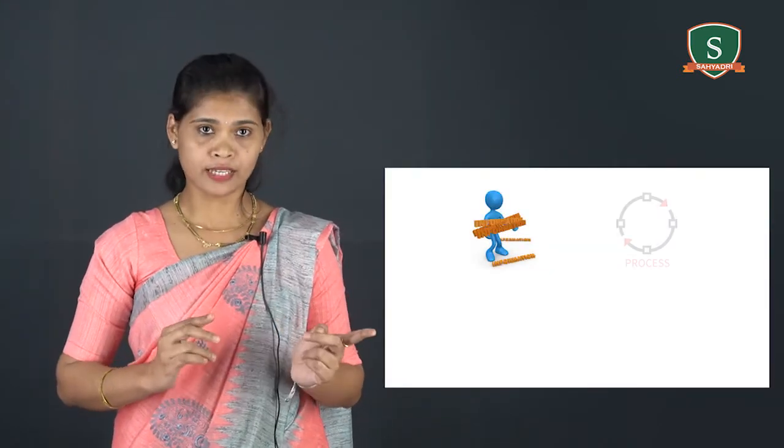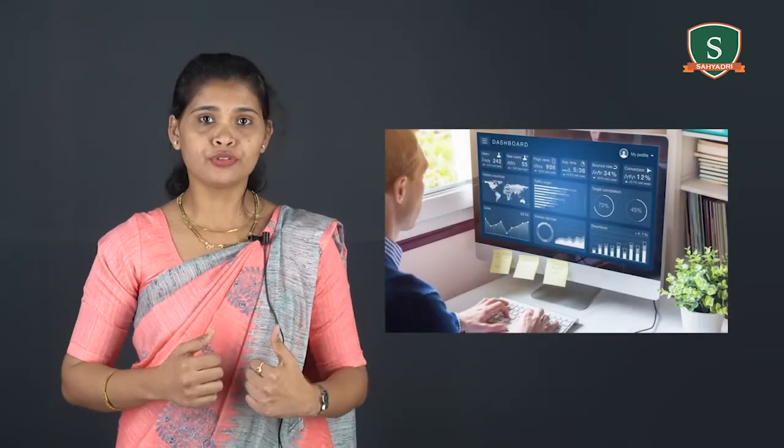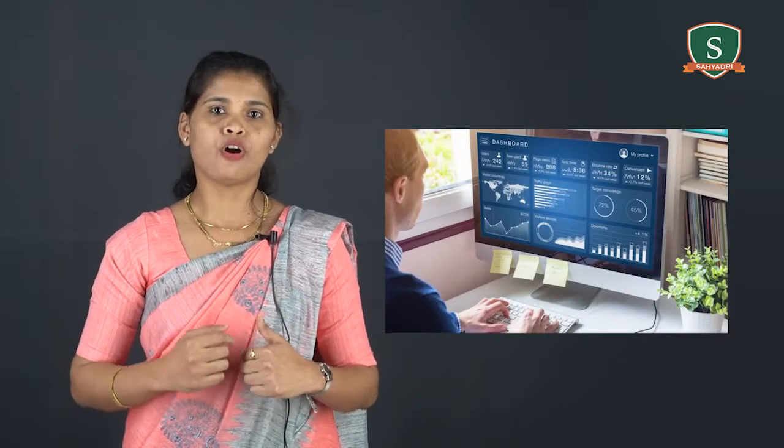Businesses use information systems at all levels of operations, such as to collect, process, and store data. Management aggregates and disseminates this data in the form of information needed to carry out the daily operations of business. For example, a car dealership could use a computer database to keep track of which products sell best. A retail store might use a computer-based information system to sell products over the internet. Many businesses concentrate on the alignment of MIS with business goals to achieve competitive advantages.